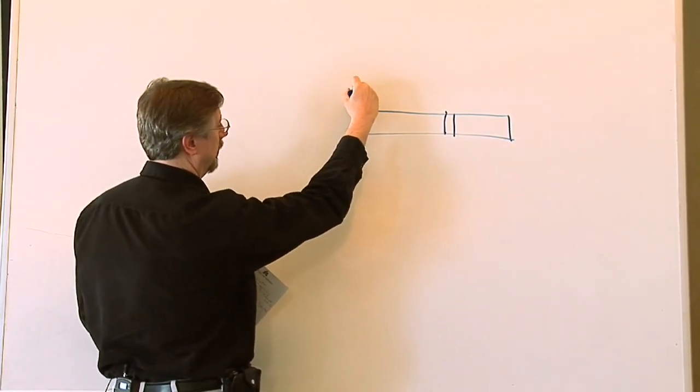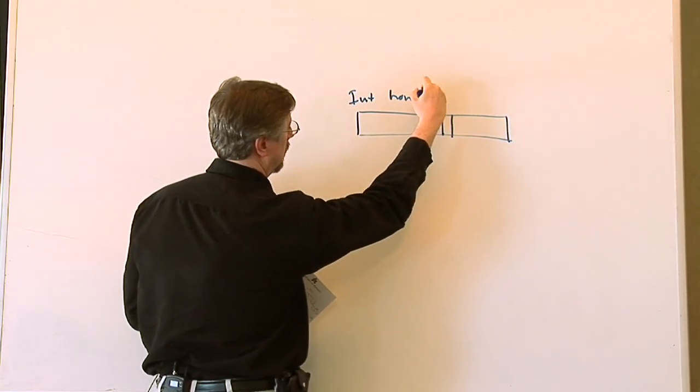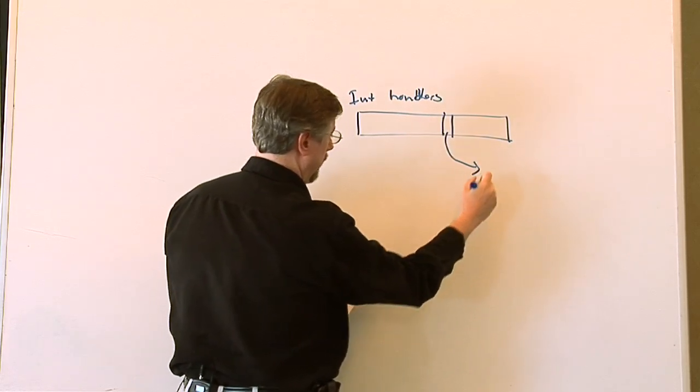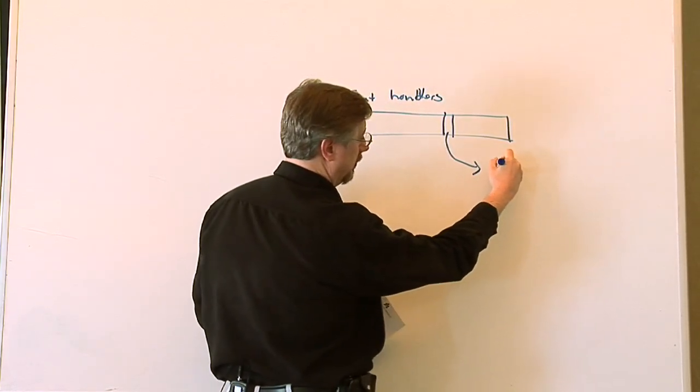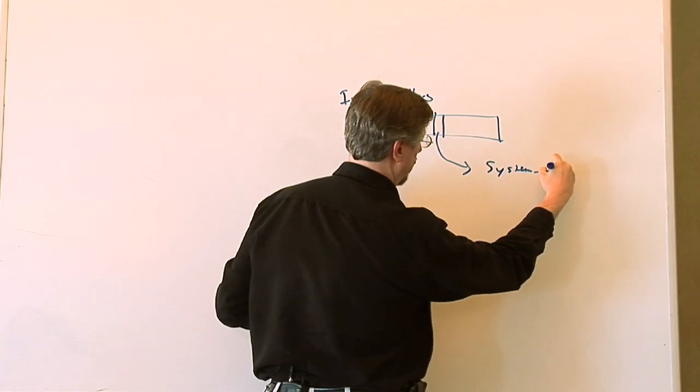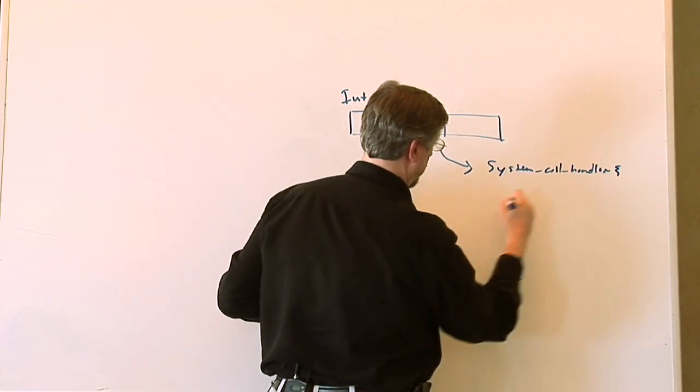So you normally have your interrupt handlers here, and then they'll have one here which returns. There's a pointer to the routine for the system call handler, which is just a routine.